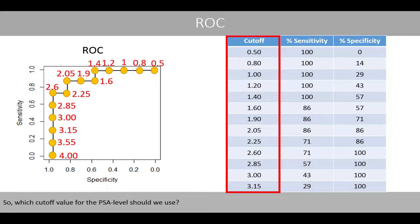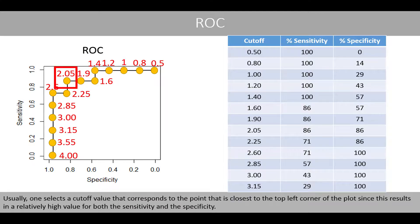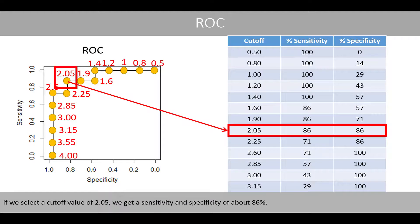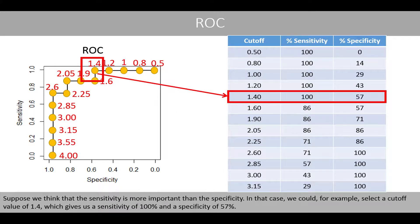So which cutoff value for the PSA level should we use? Usually, one selects a cutoff value corresponding to the point closest to the top-left corner of the plot, since this results in a relatively high value for both sensitivity and specificity. If we select a cutoff value of 2.05, we get a sensitivity and specificity of about 86%. If sensitivity is considered more important, we could select a cutoff of 1.4, which gives 100% sensitivity and 57% specificity.